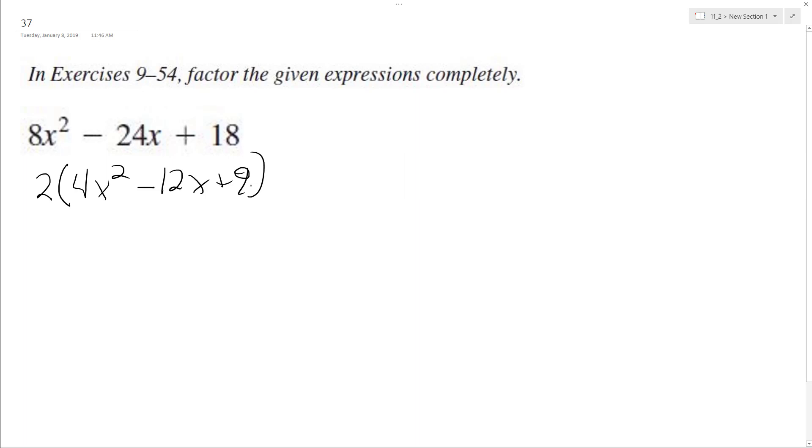And this looks like the difference of squares. So we have 2 times 2x minus 3 times 2x minus 3. And the shorthand for this is just 2 times 2x minus 3 squared.